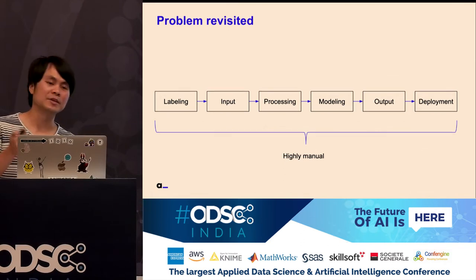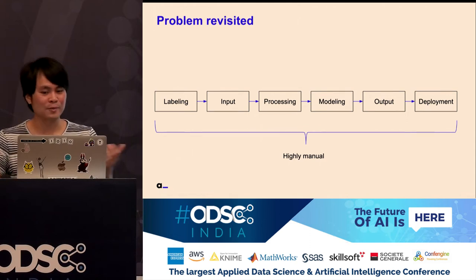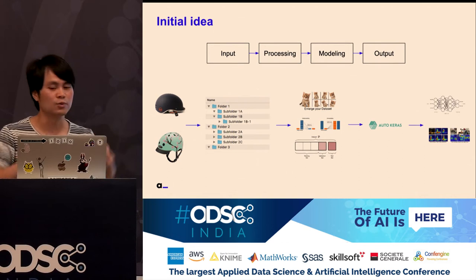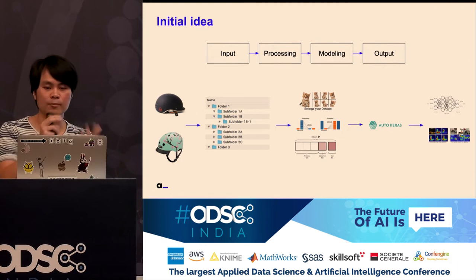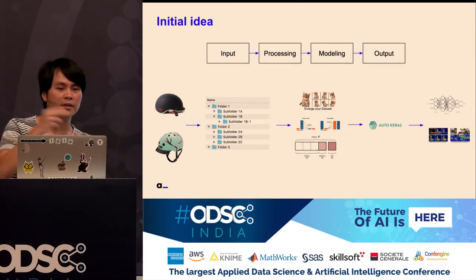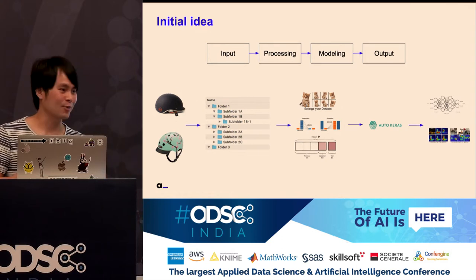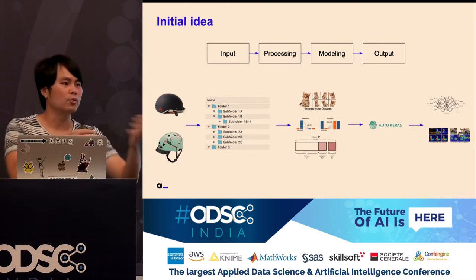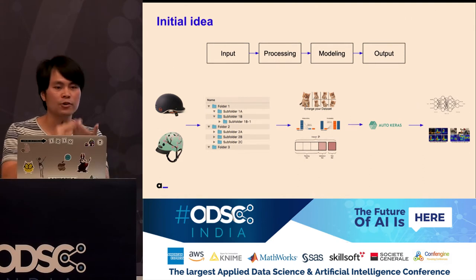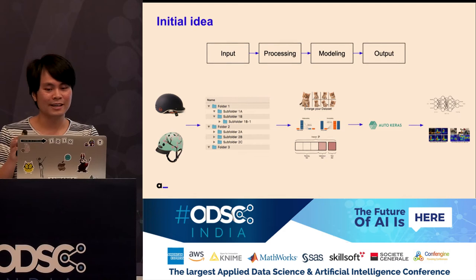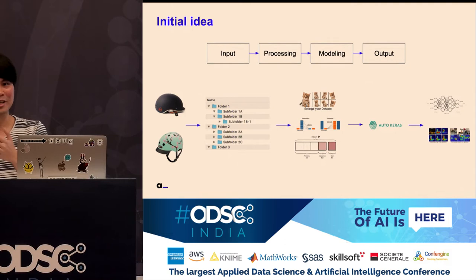When you solve an image tagging problem, I don't want to solve another one because it's boring — I want to solve interesting problems. The initial idea was to tackle input, processing, modeling, and output first, because labeling and deployment are also difficult. Deployment requires thinking about where to deploy, how to scale, whether you're using Kubernetes, monitoring, security. A lot of people think going from research to production is difficult, but they haven't seen what happens after production — post-production is also very, very difficult.